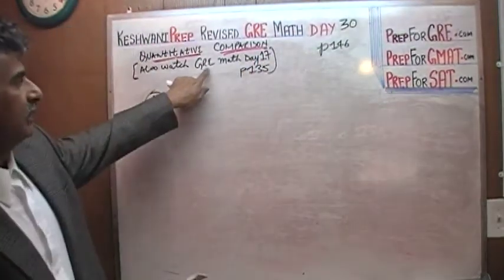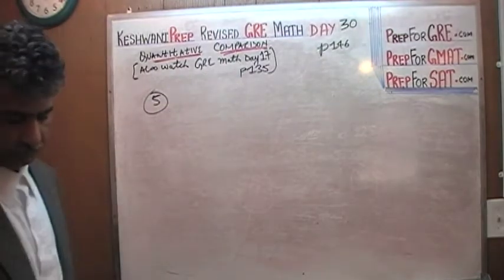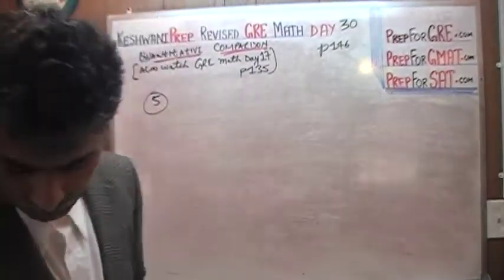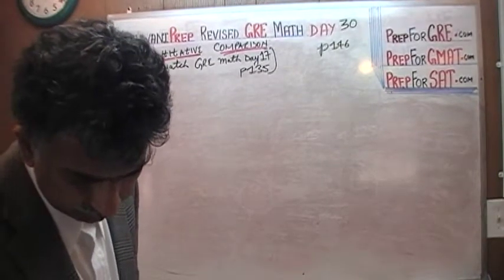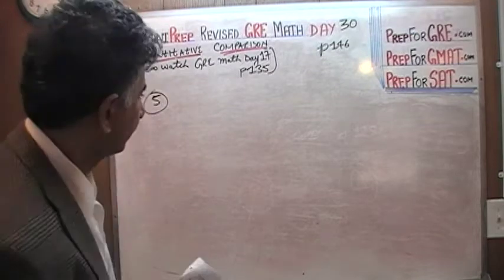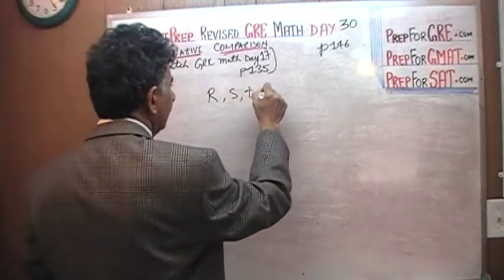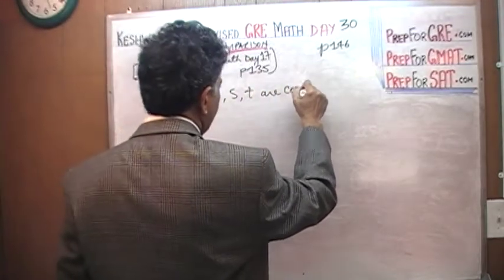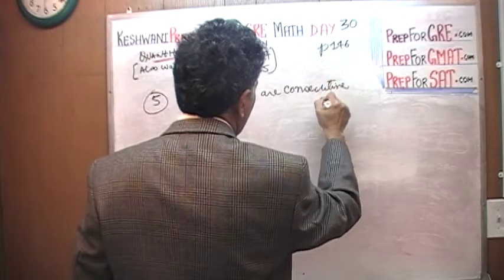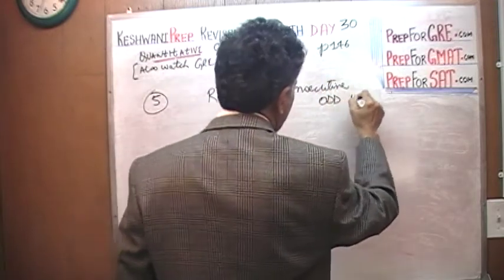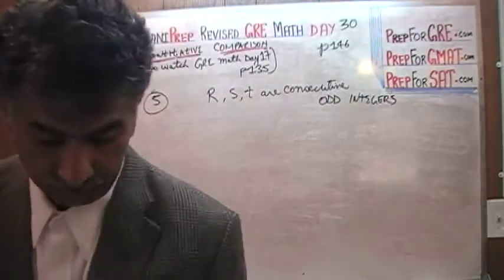Just type in GRE math, day 17, page 135 and it will pop right up. So, we are told here, there is one constraint. We are told that R, S and T are consecutive odd integers. It turns out, as a matter of fact, that we have three constraints.